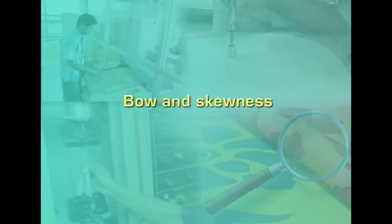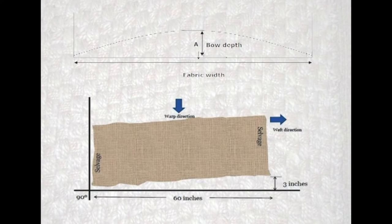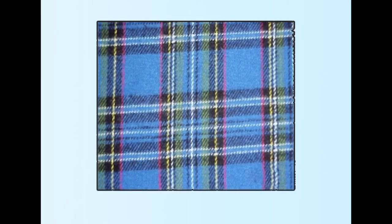The first problem we generally come across is bow and skewness. It is a simple problem because the fabric contains two sets of yarns — warp yarns and weft yarns — which are interlaced at right angles to each other. If this right angle does not occur, defects arise. When yarns are not at right angles, we see bowing and skewness. Bow occurs when the filling yarn in the middle of the fabric is ahead of or behind the sides. Skew occurs when the filling yarn is at an angle other than 90 degrees to the warp.